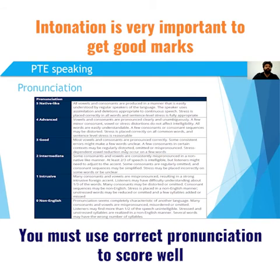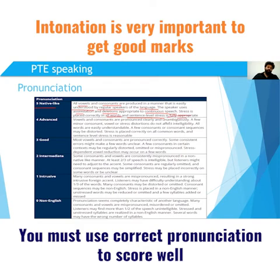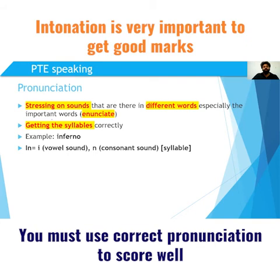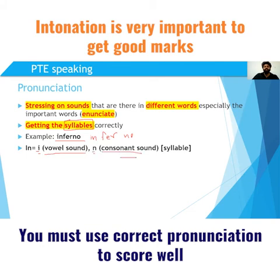Now about pronunciation. The native-like criteria says vowels and consonants are produced in a manner that is easily understood by regular speakers of the language, and that stress is placed on all words with sentence-level stress fully appropriate. Your pronunciation's base unit is something known as a syllable. If we take a word, the syllables inside it contain vowel sounds — A, E, I, O, U — along with consonant sounds. This portion is what we term as a syllable.